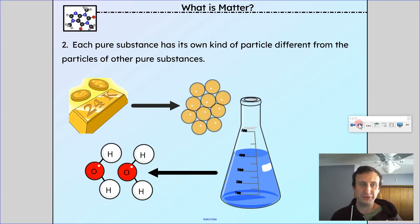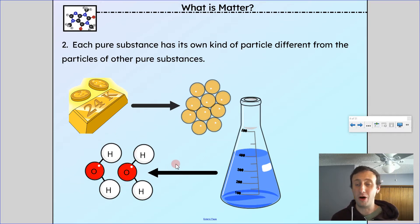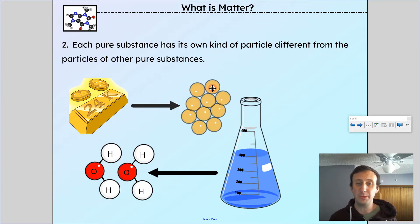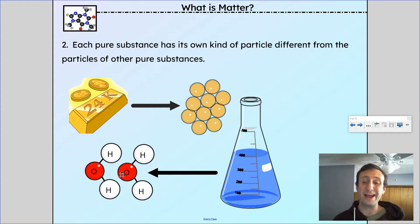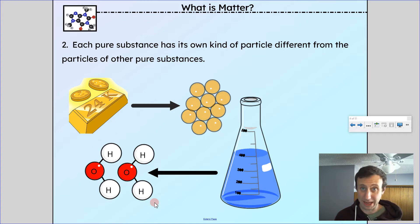Each pure substance has its own kind of particle, different from the particles of other pure substances. So every pure substance has a unique particle. If I have water, I have H2O molecules — all the particles in pure water will be H2O. For gold, every single atom will be exactly the same. Water is a compound, so not every atom is the same, but every particle — every molecule of water — is the same. For a pure substance, every particle will be identical to the other particles.